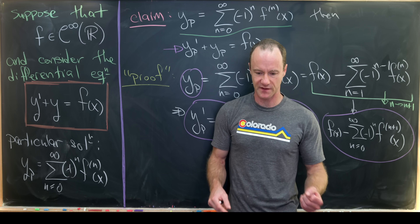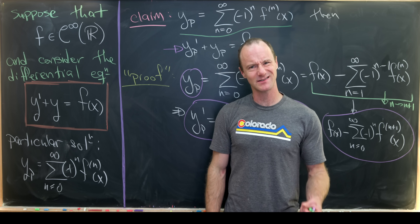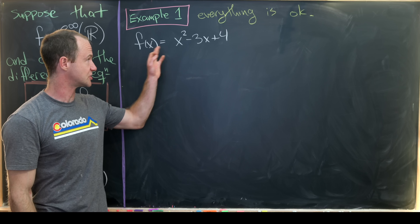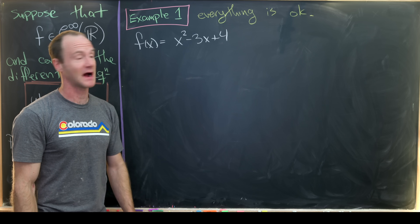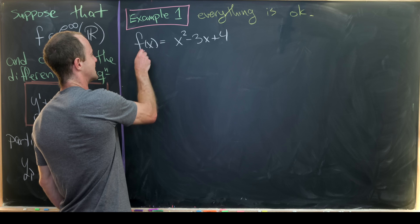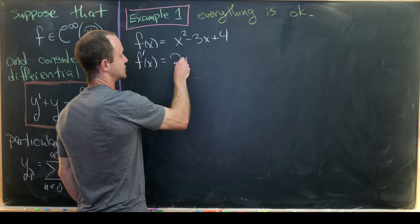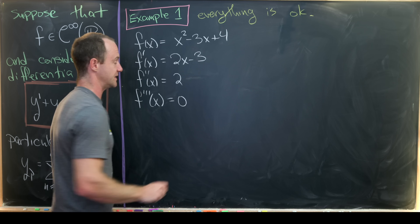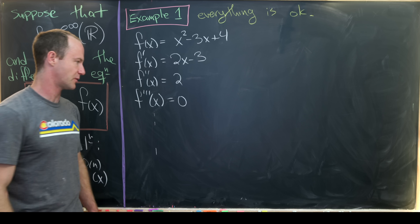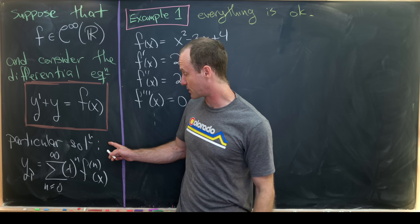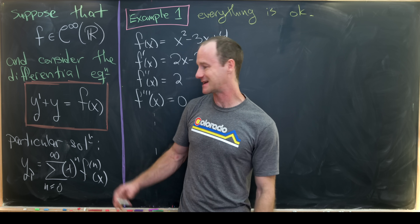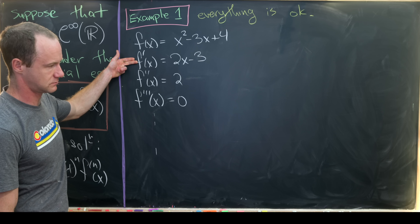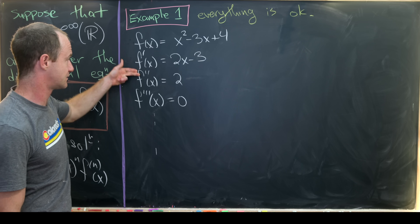Before looking at sketchy scenarios, let's consider an example where this works out fine. Take the forcing function f(x) = x² - 3x + 4. We can easily compute the derivatives: f'(x) = 2x - 3, f''(x) = 2, and f'''(x) and all higher derivatives are 0. Since f''' and higher vanish, the infinite sum for our particular solution collapses to a finite sum: yp = f(x) - f'(x) + f''(x).